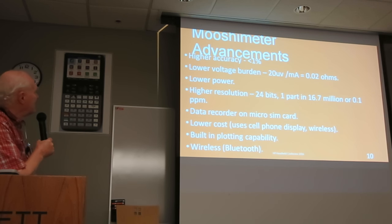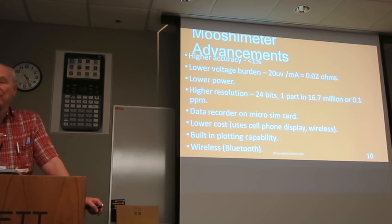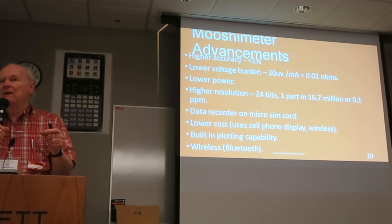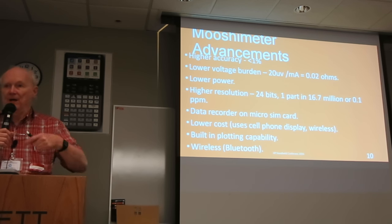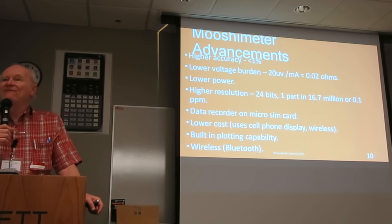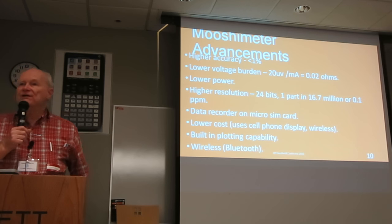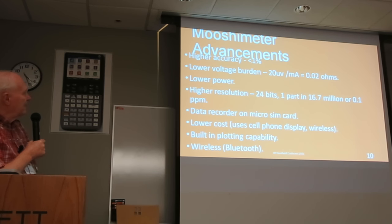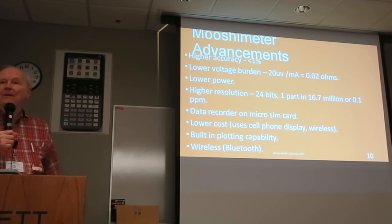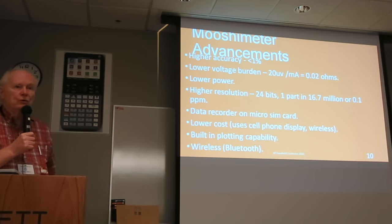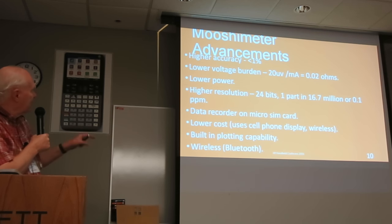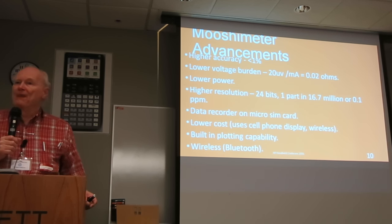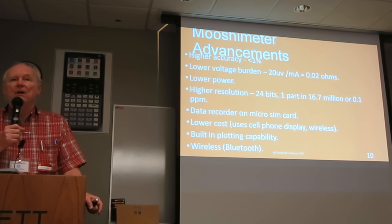The Motometer advantage is, first of all, it has a lower voltage burden. If you try to put a meter in series between a calculator and its power supply, you'll find that the meter screws up the calculator. The reason is that the calculator draws so little current that the meter upsets it. That's electrically specified as 20 microvolts per milliamp, or an inserted resistance of 0.002 ohms. The meter is also lower power, higher resolution — 24-bit — which is one part in 16.7 million, or 0.1 parts per million. A normal digital multimeter won't give you that kind of resolution.